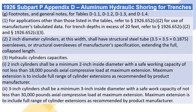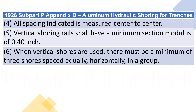4. All spacing indicated is measured center to center. 5. Vertical shoring rails shall have a minimum section modulus of 0.40-inch. 6. When vertical shores are used, there must be a minimum of three shores spaced equally horizontally in a group.